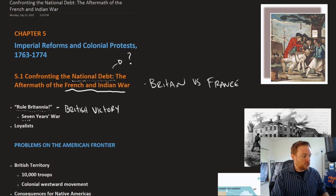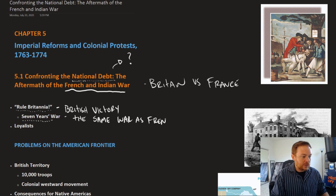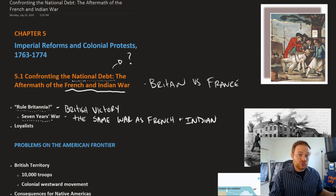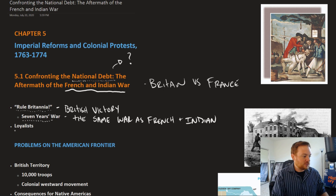This war is also referred to as the Seven Years' War — the Seven Years' War is the same war as the French and Indian War. The French and Indian War was what they called it in the colonies because the English were fighting against the French and the Indians. This war was fought elsewhere, including Europe, the Caribbean, and India, where they called the larger conflict the Seven Years' War. So they're essentially the same thing.